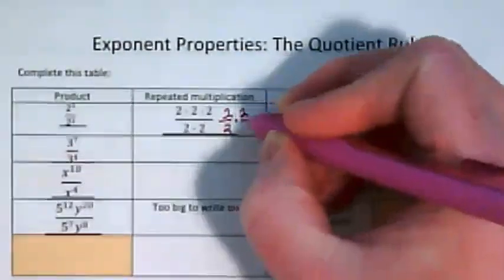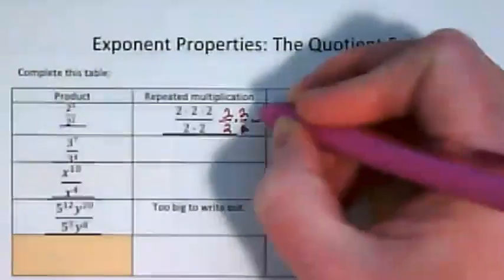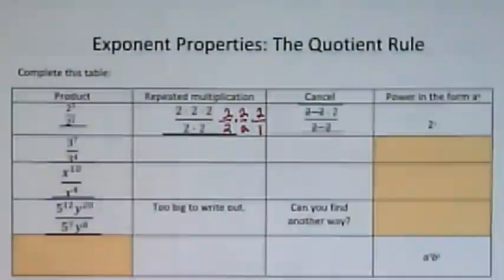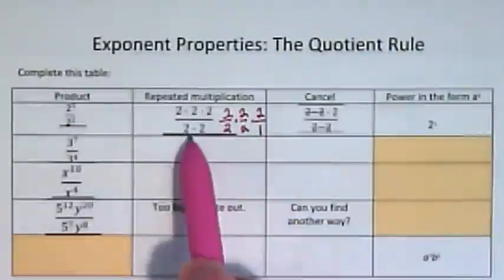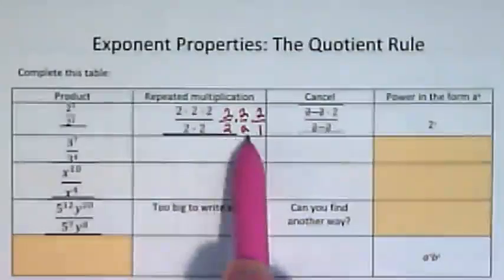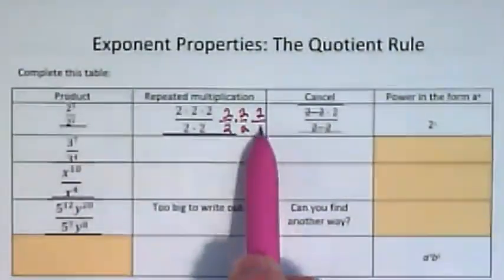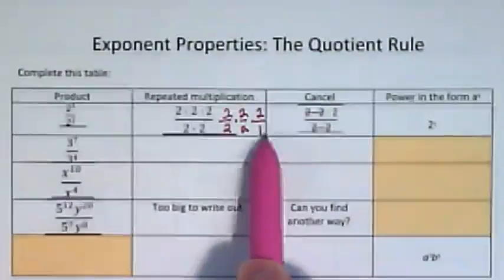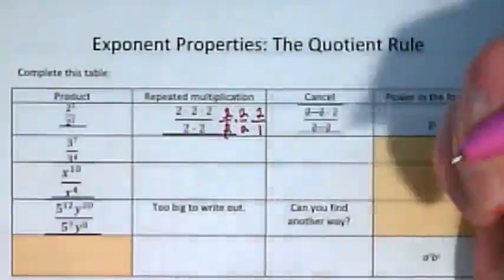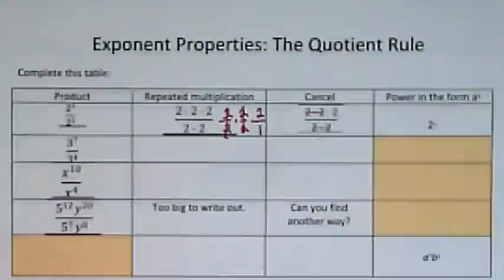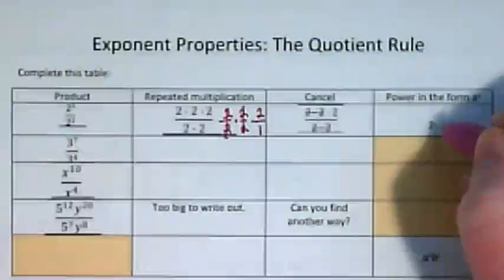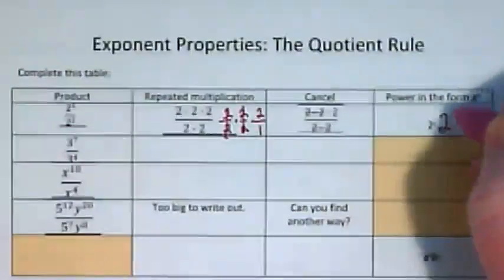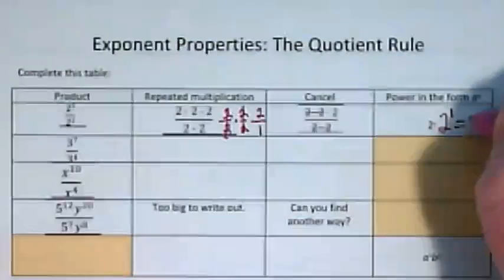When we're canceling, this is being rewritten as 2 times 2 times 2 over 2 times 2, and I put a 1 there because there's no other 2 to go underneath this 2. I made the 1 that's usually invisible visible. These cancel because they equal 1. And that leaves us with just a single 2, which can be written as 2 to the first power or just 2.